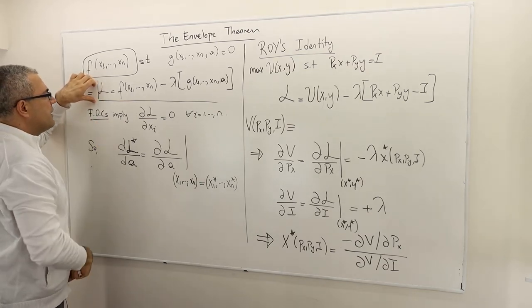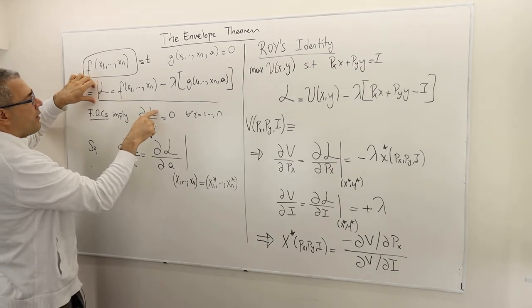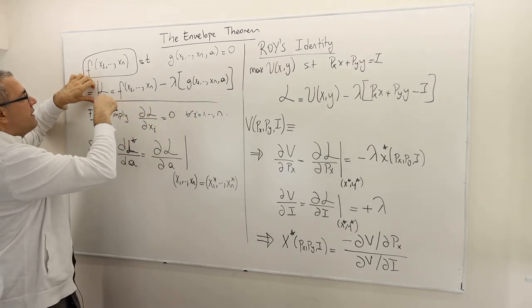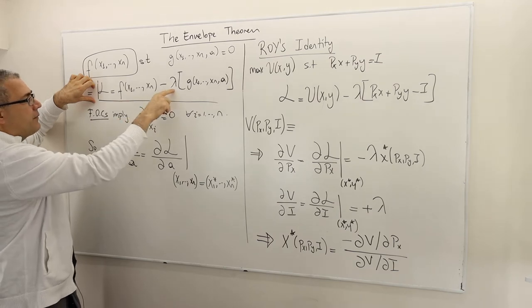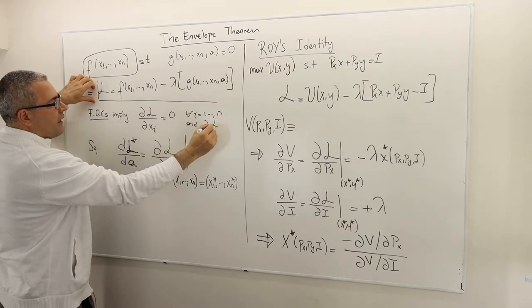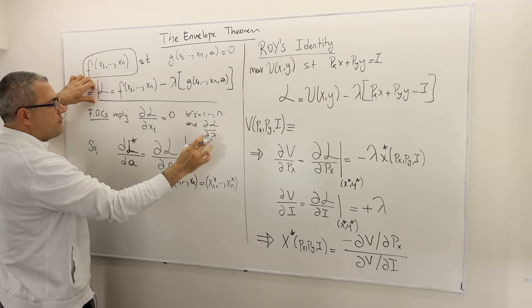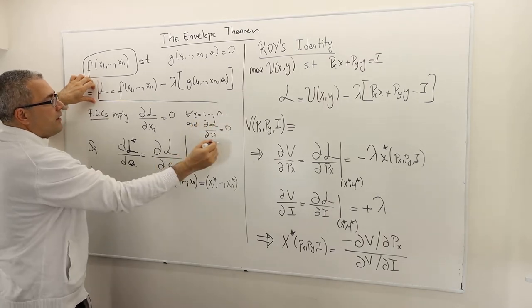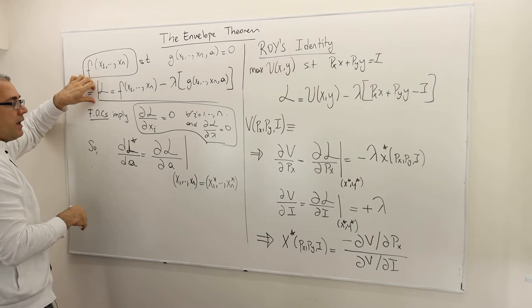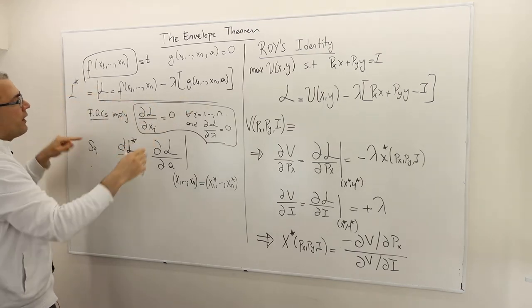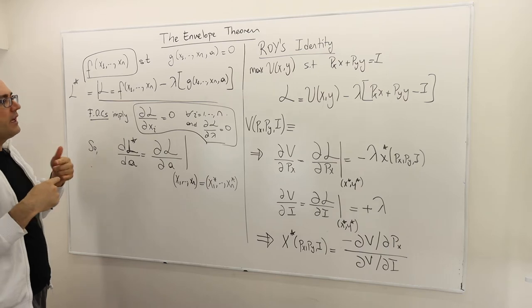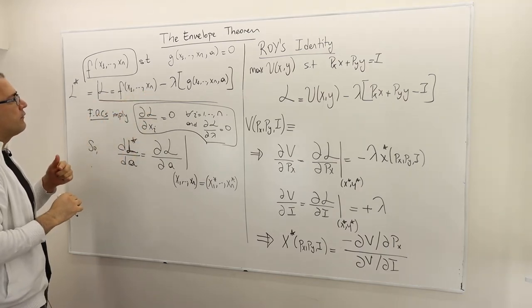If you remember the first-order conditions, they basically imply that the partial derivative of the Lagrangian with respect to each variable xi is equal to 0, and then del L divided by del lambda is also equal to 0. So these n+1 conditions are called first-order conditions. Let's suppose L* is the new function once we plug x1*, x2* up to xn* and lambda* into our functional form.